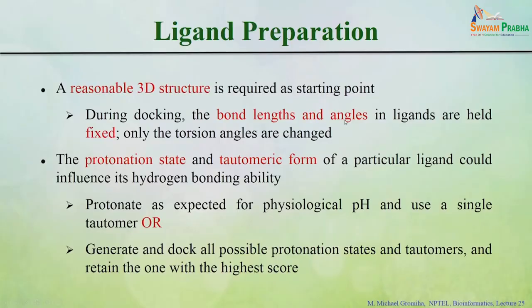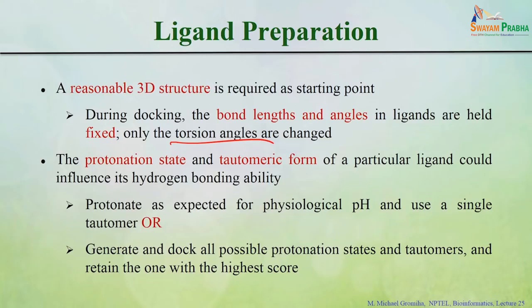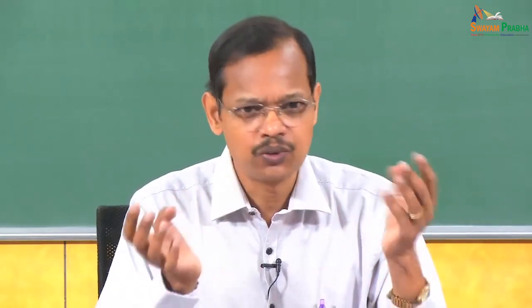On the ligand side, a probable 3D structure is also needed. In docking, bond lengths and bond angles do not change much, but torsion angles are important as they give rotation around different atoms. You also need to consider protonation states and tautomeric forms of the ligand, which influence its hydrogen bonding ability. You can use physiological pH and a single tautomer, or generate all possible protonation states and take the one with the highest docking score for further processing. Once the protein is prepared and the ligand conformations are chosen, docking can begin.